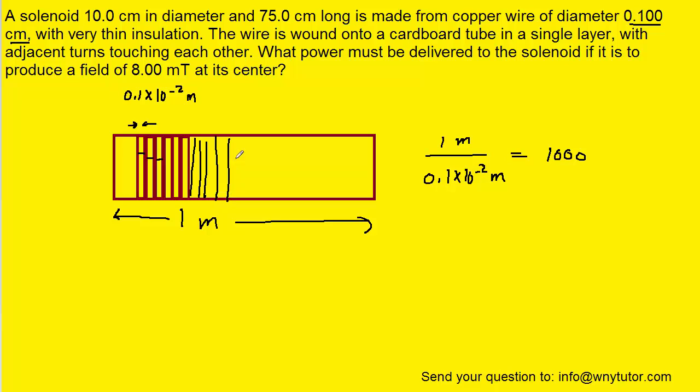If we perform that division we would see that we would get 1,000 of these little strips of wire all along the length of the cardboard tube. In other words, the value of lowercase n would be 1,000 turns of wire per meter of cardboard tube. So this is the value of n that we're going to be using.